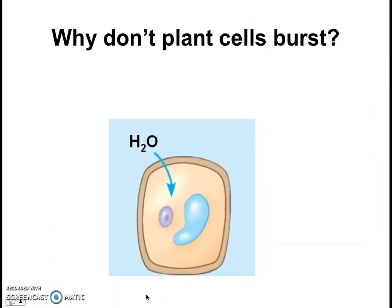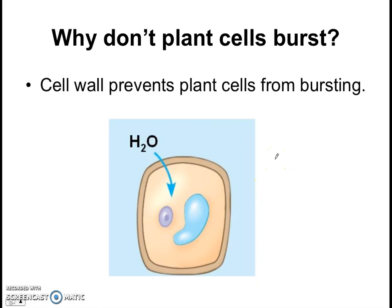Now, as we'll see, animal cells in distilled water will burst. But why do plant cells not burst? Water can move into the cell, but the cell doesn't burst. Well, it has to do with the difference between plant cells and animal cells. What structure in the plant cell is not found in the animal cell? If you're thinking the cell wall, you're getting close — it is the cell wall that prevents plant cells from bursting. Water can move in, but the cell wall prevents the cell from bursting.